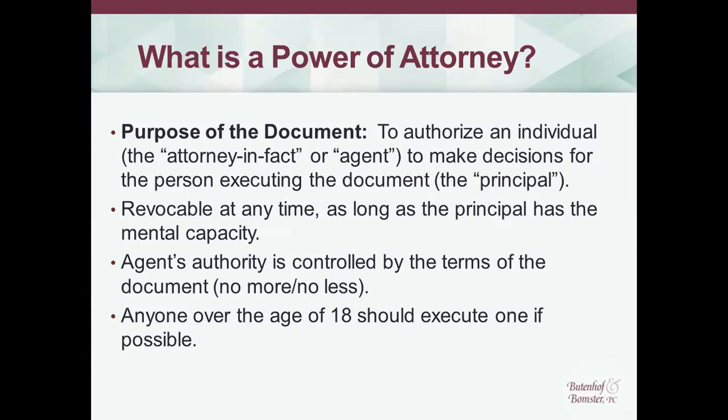You have to have mental capacity to sign one of these documents, so it can't be signed by everybody. Mental capacity is generally determined by the lawyer drafting the document, assessing whether the person understands the document in front of them. There's not one particular test for doing this, but it's of grave concern to the person drafting the document to make sure the individual understands it and has the mental capacity. They're also revocable, as long as the principal has the mental capacity to do so. The authority of the agent or attorney in fact is going to be controlled by whatever is in that document, and how that document is written determines whether they can take a particular action. If you're over the age of 18 and have mental capacity, you should be executing this kind of document.